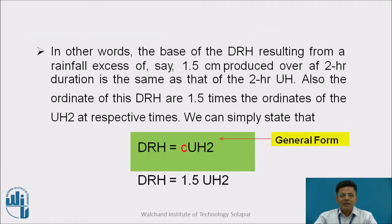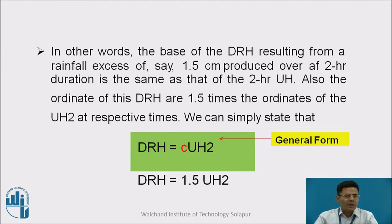In other words, we can say the base of the direct runoff hydrograph resulting from a rainfall excess of, say, 1.5 centimeter rainfall produced over 2-hour duration is the same as that of the 2-hour unit hydrograph. Also, the ordinates of this direct runoff hydrograph are 1.5 times the ordinates of the 2-hour unit hydrograph at respective times. So we can simply state that the direct runoff hydrograph ordinate will be C times the unit hydrograph of 2 hours. For example, suppose the rainfall excess is 1.5 centimeter, so the ordinates are to be multiplied by 1.5.